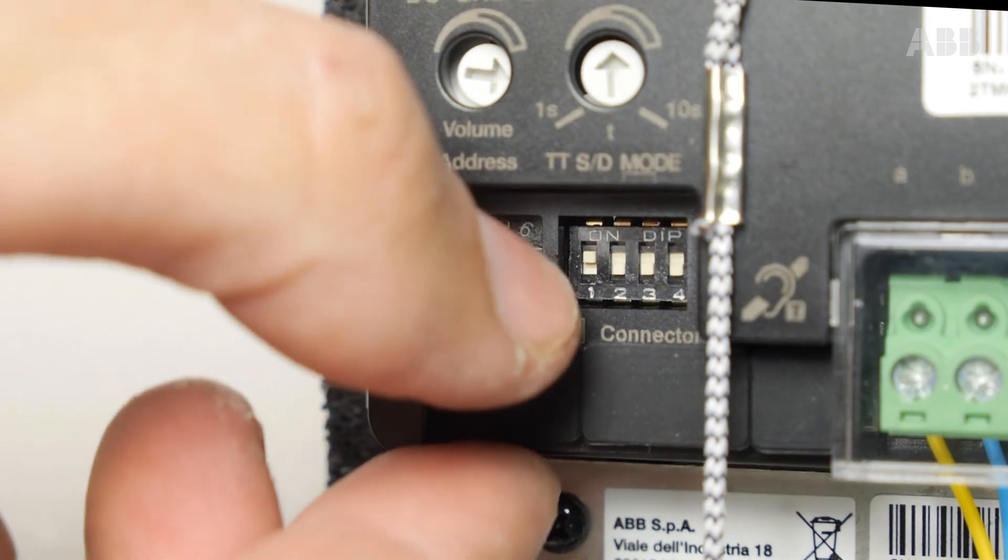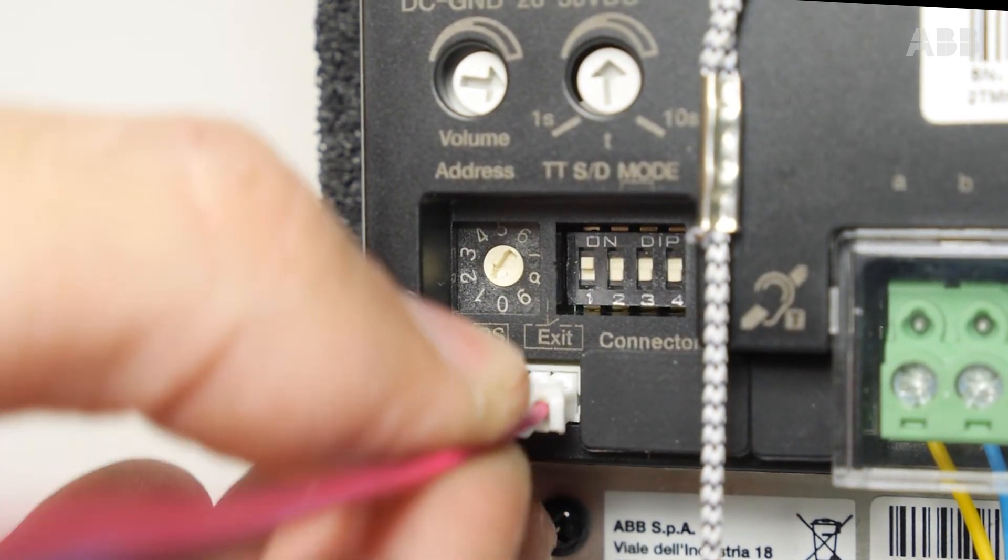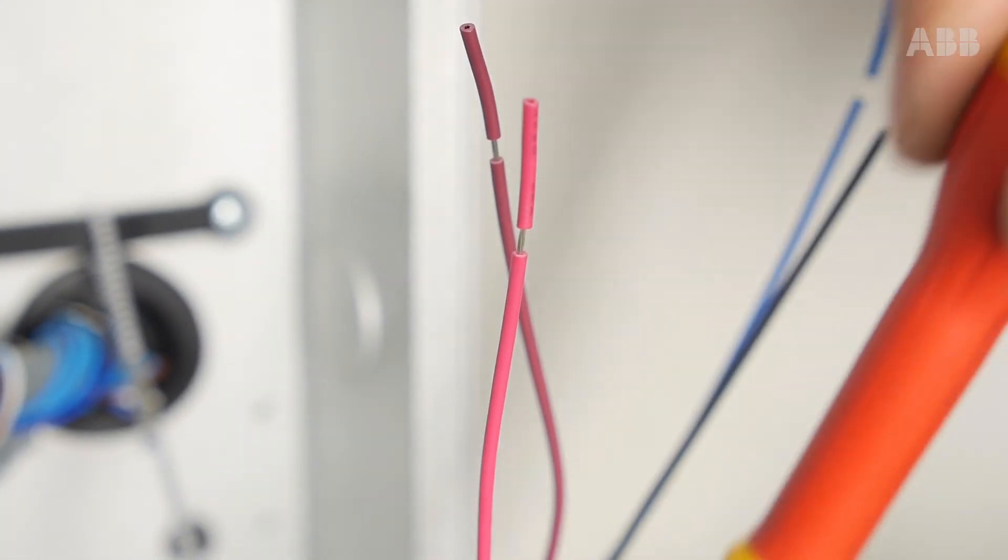To invert the contacts, you must first access the station configuration mode. For this, use the small connector provided in the kit so that you have access to the four wires.